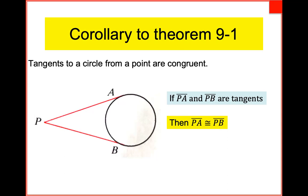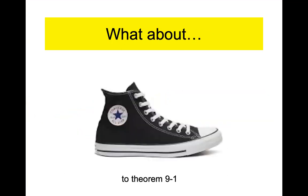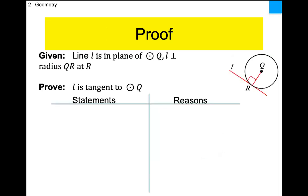One more theorem and then we have vocabulary left and we're done. The converse to 9.1 does exist — we're about to prove it. Here's the converse: 9.1 says if you have a tangent, it's perpendicular. The converse says if they are perpendicular, then it's got to be a tangent. So if they are perpendicular, then line L has got to be a tangent. We're going to prove it the same way — proof by contradiction.